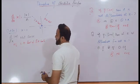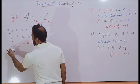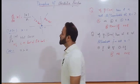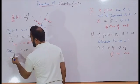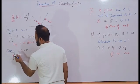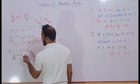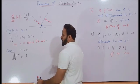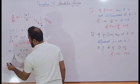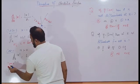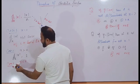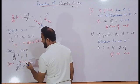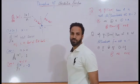Case 2: when x is greater than 0, the derivative of this absolute function is equal to 1. Case 3: for x less than 0, the derivative of this absolute function is minus 1.